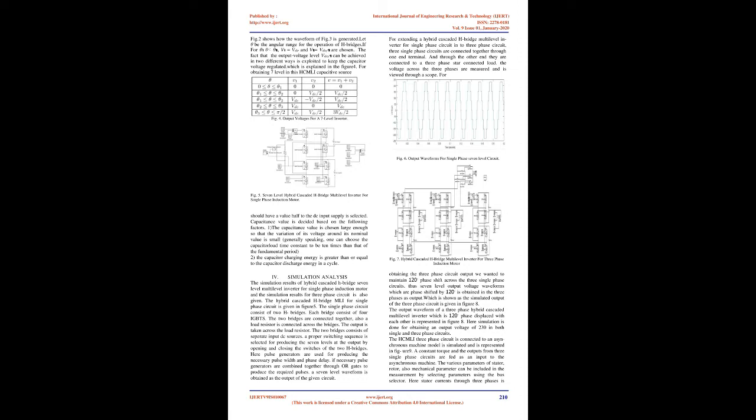By opening and closing the switches of H1 appropriately, the output voltage V1 can be made equal to VDC, 0, or −VDC, while the output voltage of H2 can be made equal to +VDC/2, 0, or −VDC/2 by opening and closing its switches appropriately. To regulate the capacitor voltage and guarantee the output power quality, a seven-level fundamental switching scheme has been proposed.